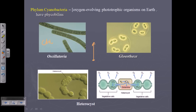Cyanobacteria can also fix nitrogen. They take nitrogen from the environment, utilize it, and produce ammonia or inorganic compounds. This ammonia can then be incorporated to make the amino acid glutamine. The nearby cells can take this amino acid from the nitrogen-fixing cells. So cyanobacteria perform both photosynthesis and nitrogen fixation.